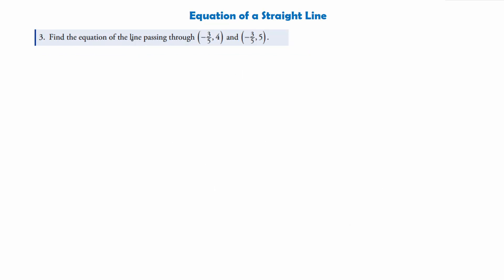One more quick example. We're asked to find the equation of the line passing through (−3/5, 4) and (−3/5, 5). Before working out the gradient, we can immediately see that the x-coordinate in both points is the same. Lines with the same x-coordinate are vertical lines, and the gradient of vertical lines is undefined. So the equation is simply x equals k, and here k is always −3/5.